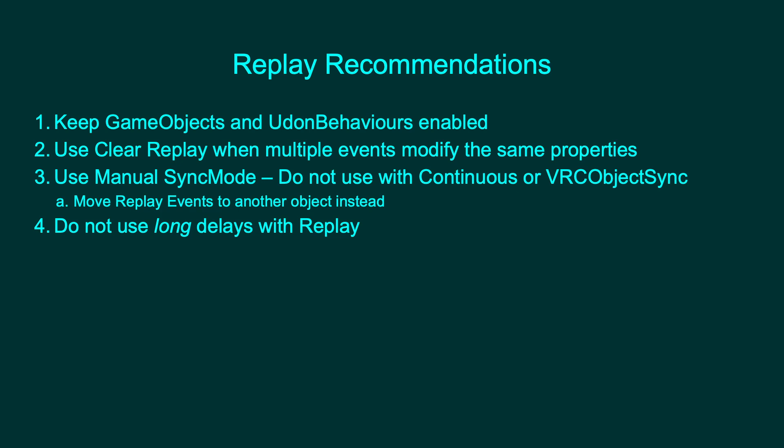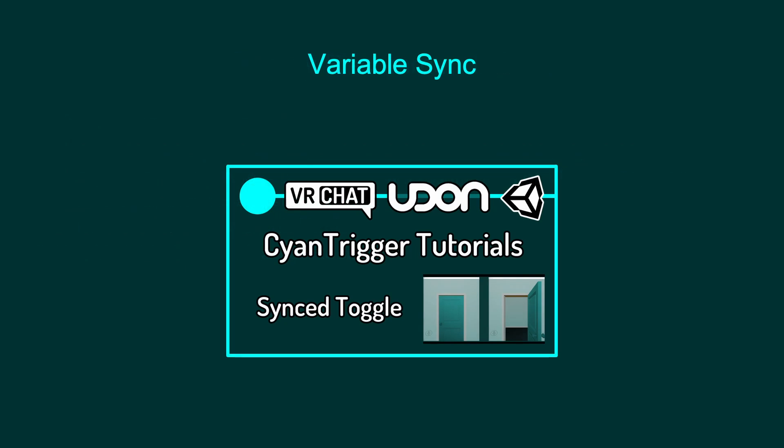For the last recommendation, use Variable Sync instead of Replay when possible. Event Replay is one form of syncing, but it is not the most efficient way to sync an Udon. I created Replay to simplify late joiner sync using only events and not require you to learn variables. That said, VRChat recommends that sync in Udon be done through variables. Learning how to use variables will help you sync more complicated systems. Some things possible with SDK2's buffering cannot be done with event replay and must be done using variables. Variable Sync can also cover more edge cases, as by default it handles both players in the room and late joiners with the same logic. If you want an intro on how to use variables to sync in CyanTrigger, you can watch my synced toggle tutorial.